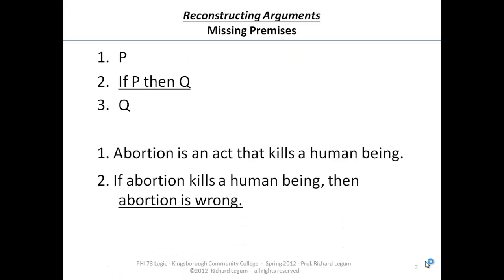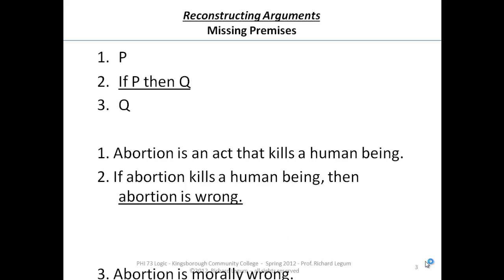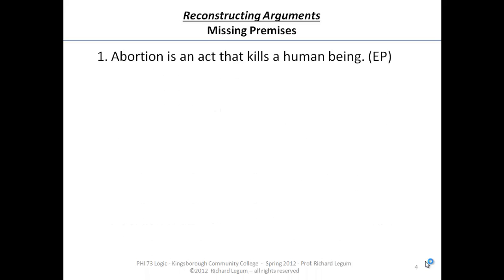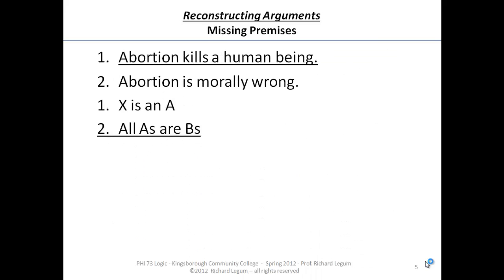So we ended up with a premise, now number two: if abortion kills a human being, then abortion is wrong. And you might say, why is this one true? Maybe it works in this case, but in others it might not. But maybe there's another inference that we want to look at.